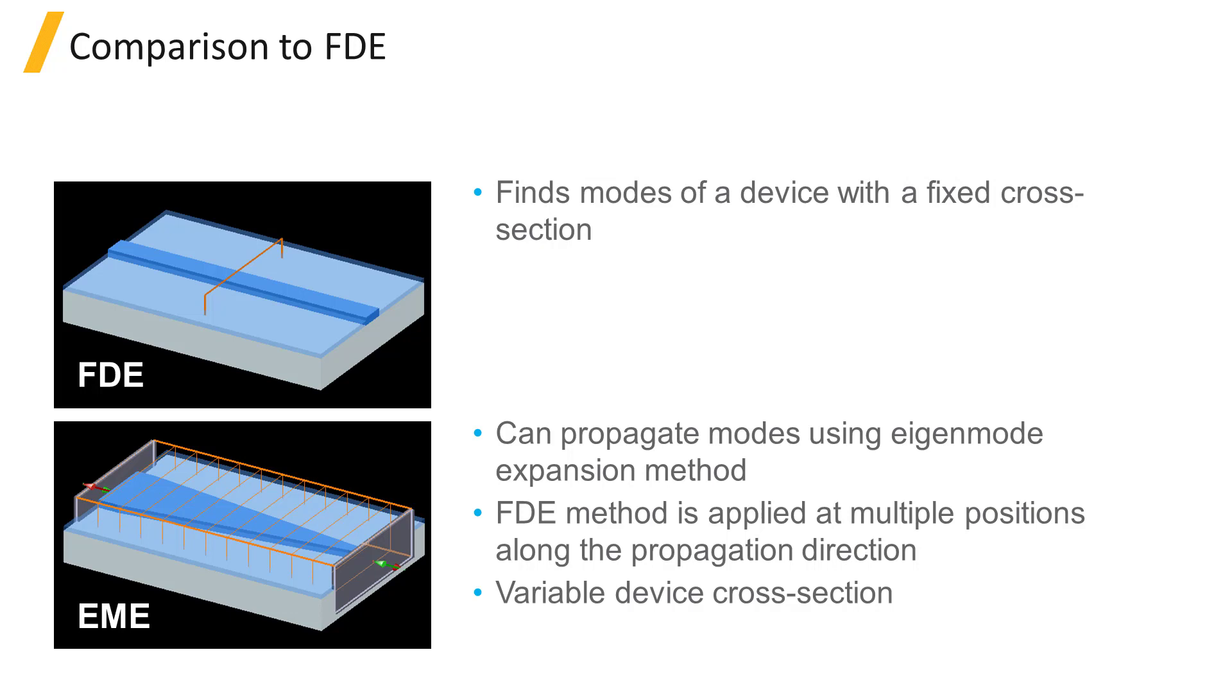The EME solver can simulate devices with a non-uniform cross-section. It uses the FDE solver to find the supported modes at many cross-sections, then calculates how an arbitrary mode will propagate through the system using the eigenmode expansion method. This method will be covered in more detail in the solver physics section.